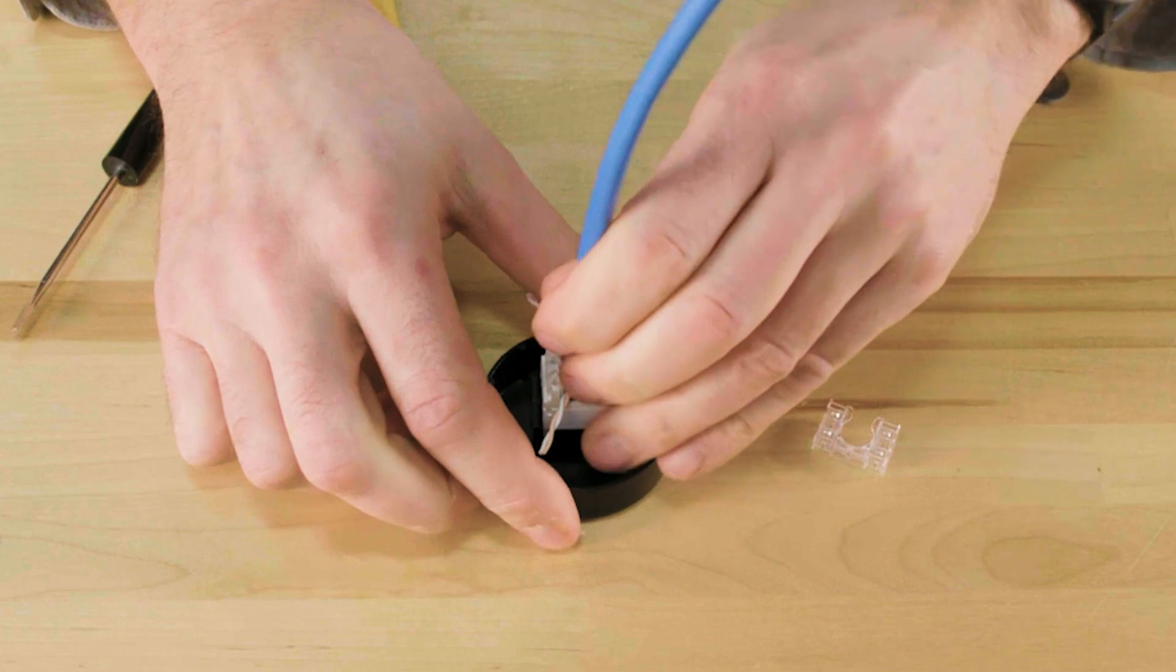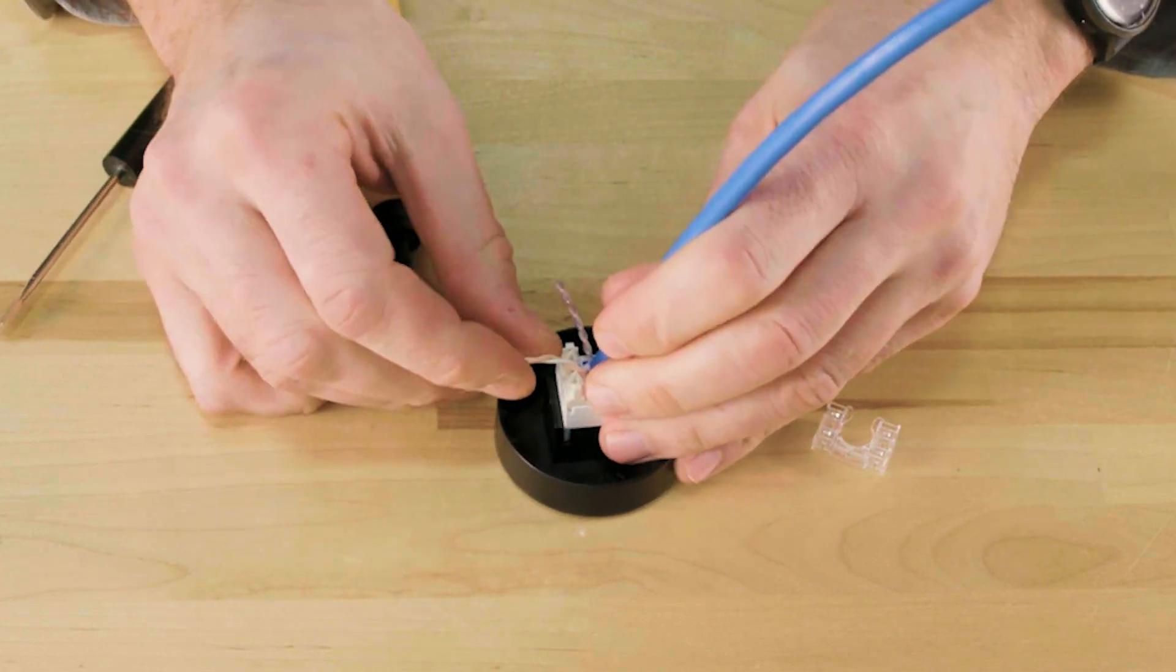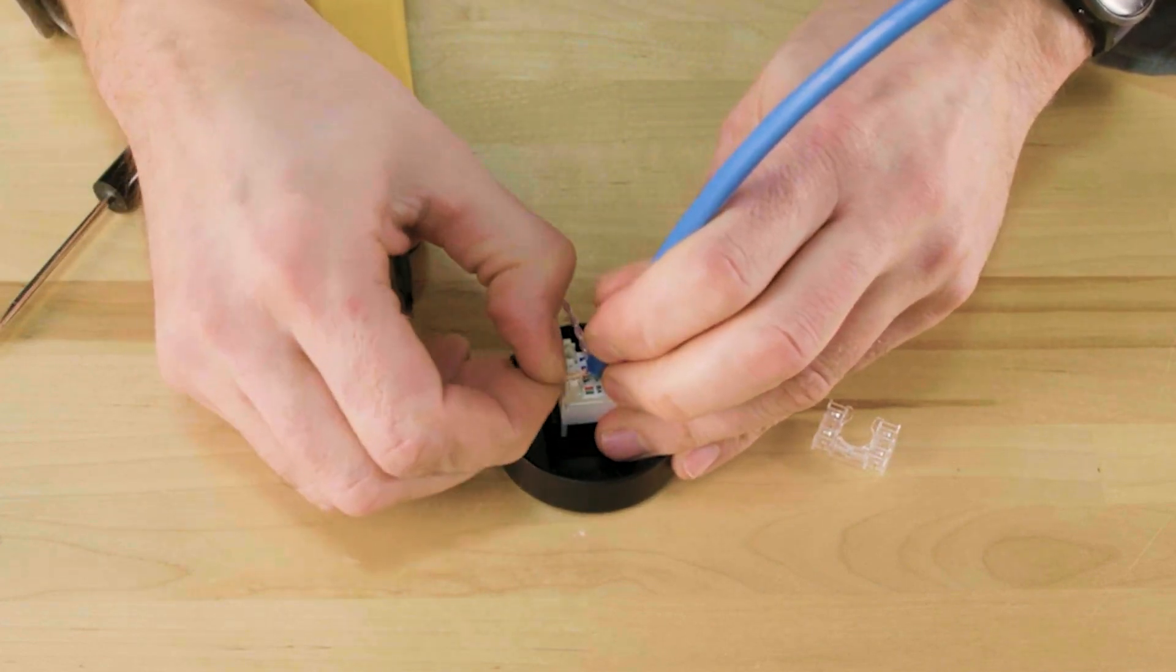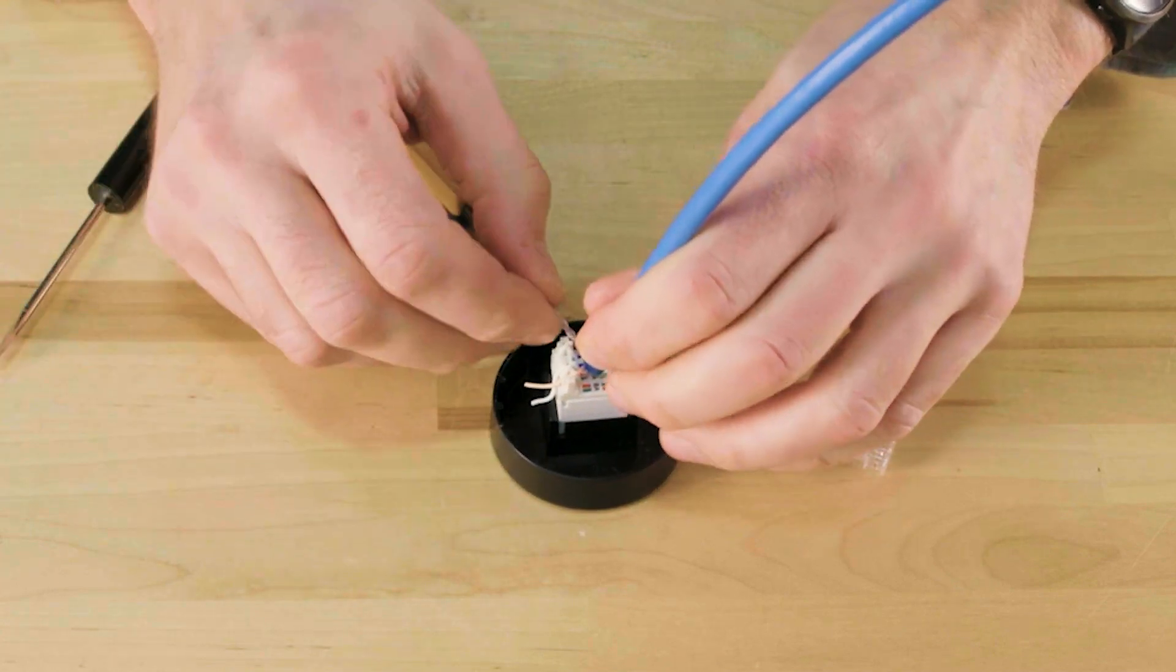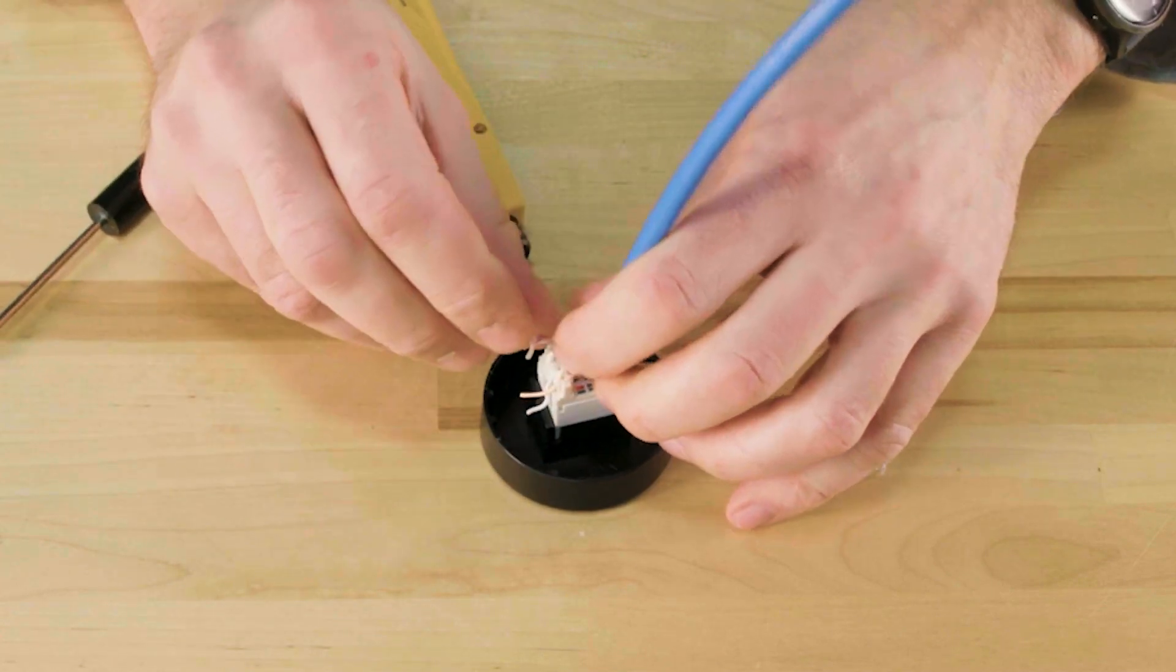Rotate the base to access the orange pair. Pull this pair down and into place. Then do the same for the blue cables.